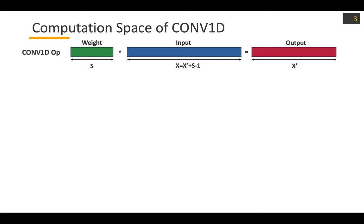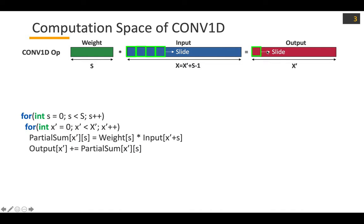To discuss the mapping representation, I'll use the CONV1D operation as a simple target application. What CONV1D does is essentially a sliding window operation. We overlap the weight vector on the input and compute the element-wise multiplication, then accumulate all the multiplication results to produce the final output. Then we move on to the next position, sliding by one, and compute the next output performing the same operation.